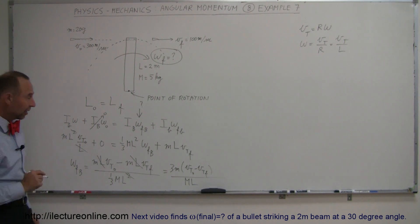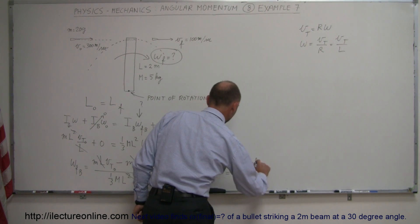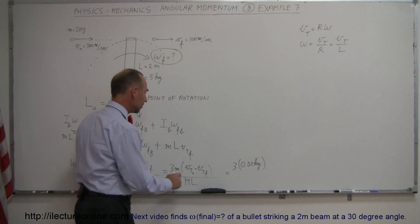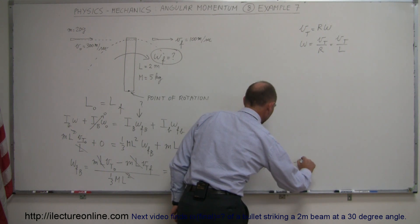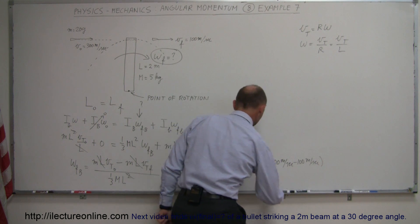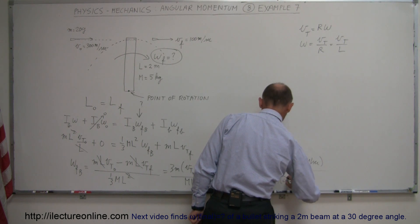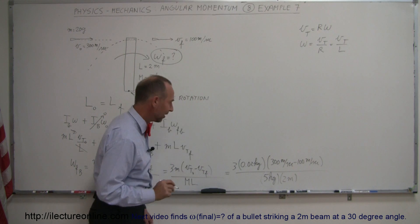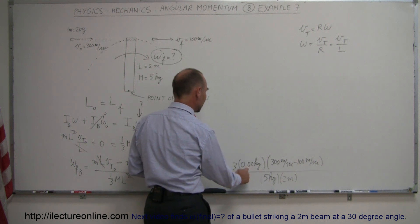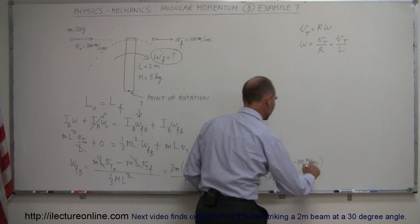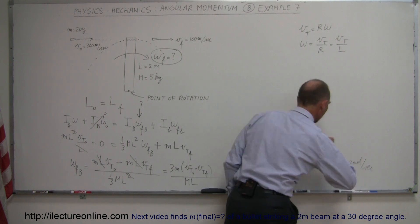Plugging in the numbers: 3 times the mass of the bullet, which is 0.02 kilograms (converting from 20 grams), times (300 minus 100) meters per second, divided by the mass of the beam, 5 kilograms, times the length of the beam, 2 meters. The denominator is 10. We get 200 times 0.02 equals 4, times 3 equals 12, divided by 10, which gives 1.2 radians per second.